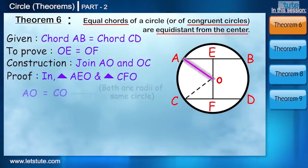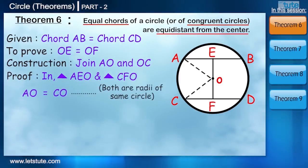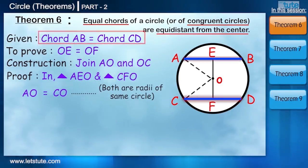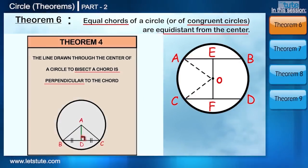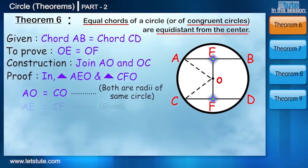AO is equal to CO because they are the radii of the same circle. We know AB is equal to CD because it's given. And according to the perpendicular bisector theorem, E and F are the midpoint. And hence from this we can say that AE is equal to CF.